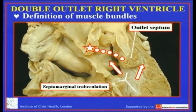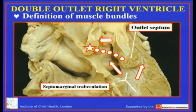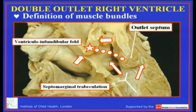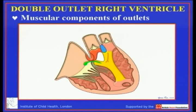The other important structure extends through the roof — the superior margin of the ventricular septal defect. Its cut edge, shown by a star, is the muscular inner heart curvature separating the leaflet of an arterial valve (in this instance the aortic valve) from the leaflet of an atrioventricular valve (the tricuspid valve). Being the inner heart curvature, we name this structure the ventricular infundibular fold. These are the three key muscular building blocks that determine the arrangement of double outlet right ventricle.